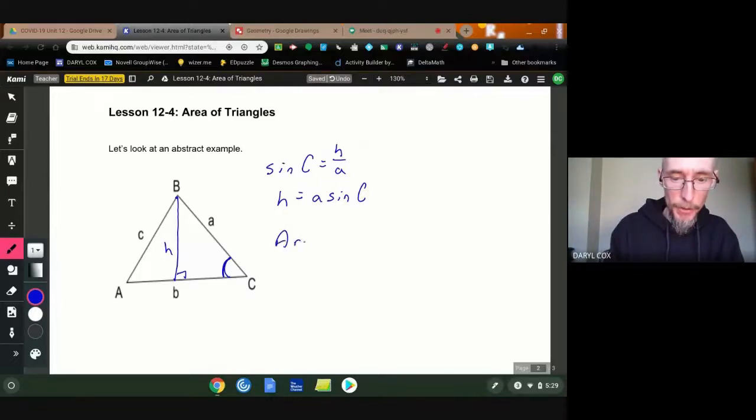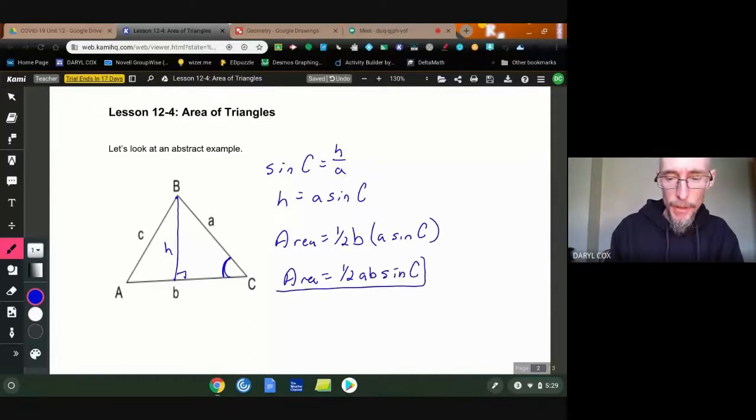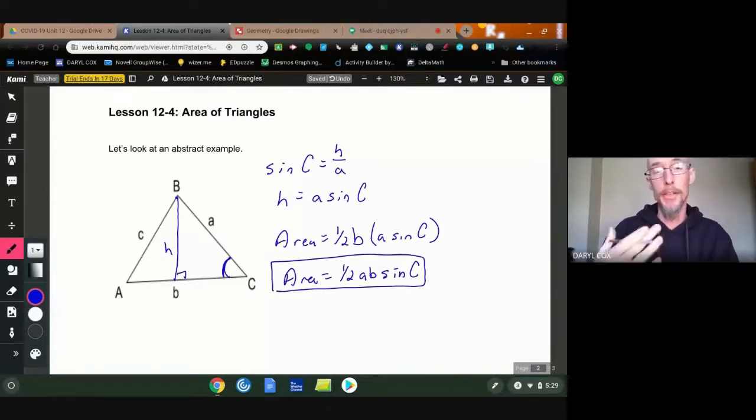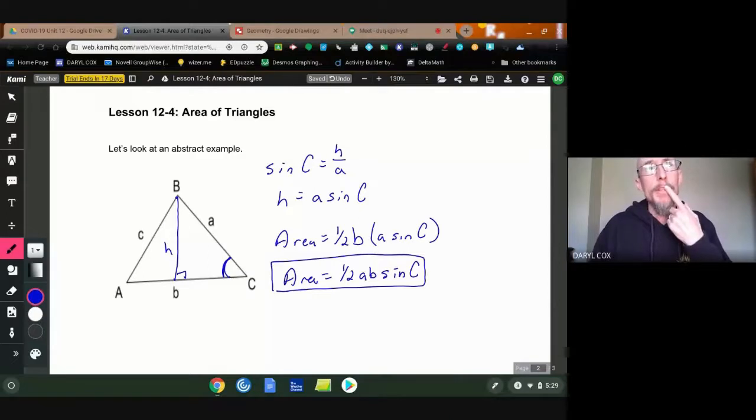Because the area of the triangle is the half, the area of the base, which in this case happens to be B, times the height, which is A sine of angle C. Or I could rewrite this as area equals one half AB sine of C. I never need to know the height. Trig allows us now to calculate areas of triangles when I don't even know the height. I just need two sides and the angle in between them. Hmm. Gee, that sounds a lot like side angle side.